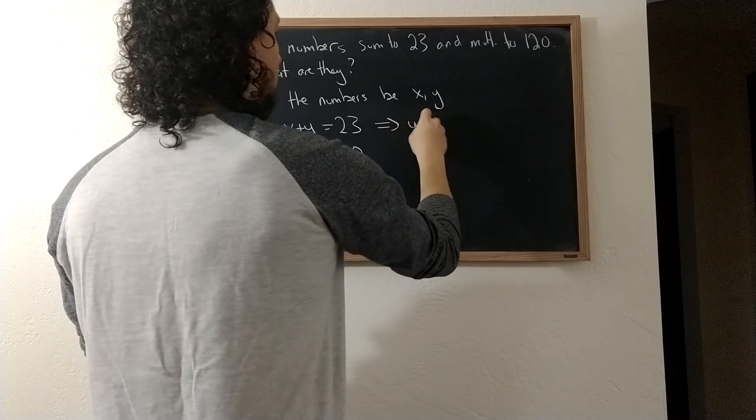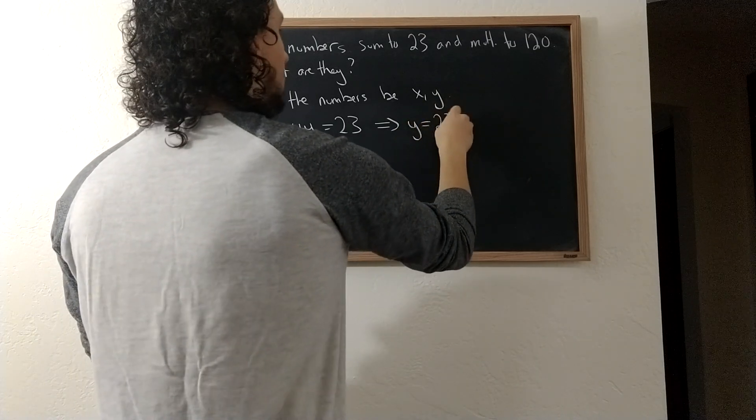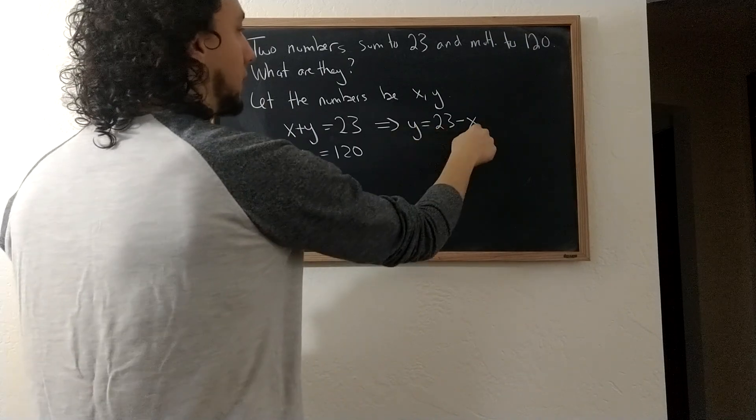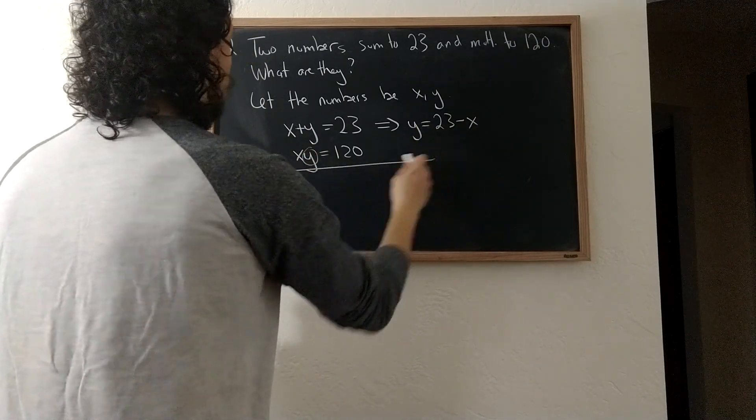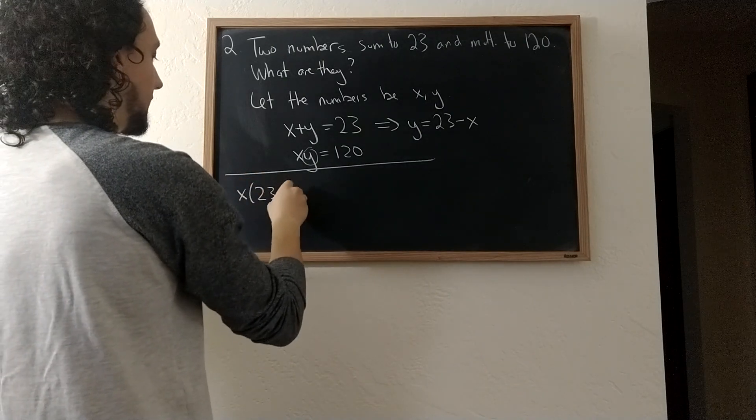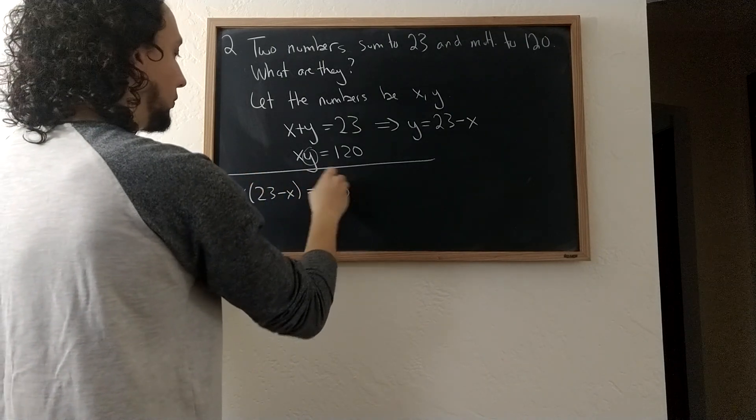So for example, from this it follows that y equals 23 minus x. And if y is 23 minus x, I can substitute that in here to get x times 23 minus x equals 120.